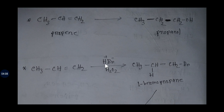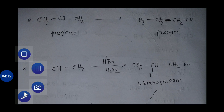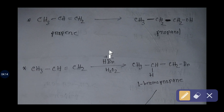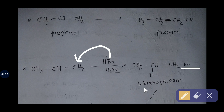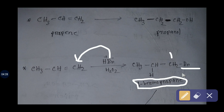In the presence of hydrogen peroxide, bromine goes to carbon 1, giving us 1-bromopropane — carbon 1, carbon 2, carbon 3 — this is 1-bromopropane.